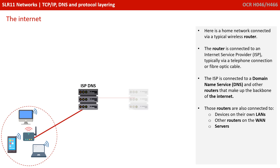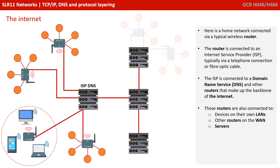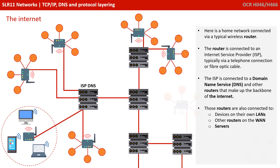Here is a home network connected via a typical wireless router. The router is connected to an internet service provider, typically via telephone connection or fibre optic. The ISP is further connected to a domain name server and other routers that make up the backbone of the internet. Those routers are also connected to devices on their own LANs, other routers on the WAN, and servers.